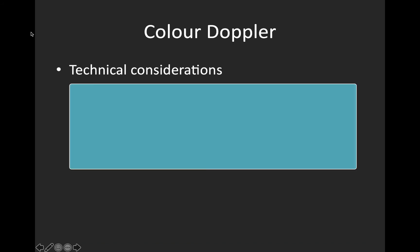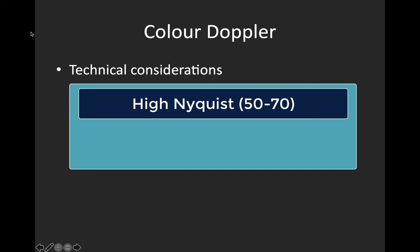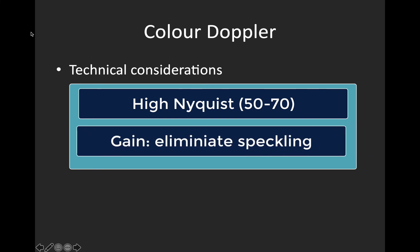Generally the color presets on your machine are pretty good on the cardiac setting, but you can adjust your Nyquist limit, your PRF, and your gain. Note that in the heart we want a high Nyquist limit, as we're interested in high velocity blood flow.